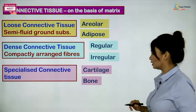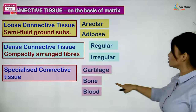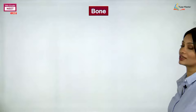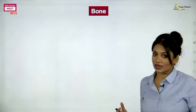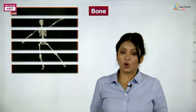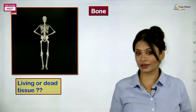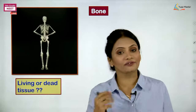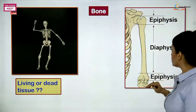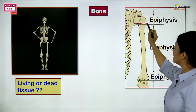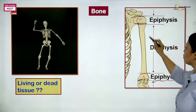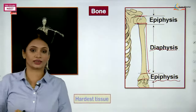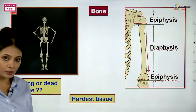In the last lecture we finished discussing cartilage and gave a brief introduction to bone. Today we continue with bone and begin blood. A quick recap: bone has its own blood supply, making it a living tissue. The expanded ends of bones are called epiphysis, and the shaft is called diaphysis. Bone is the hardest tissue in our body after tooth enamel.